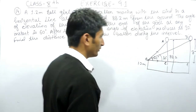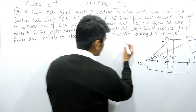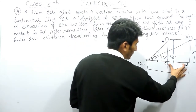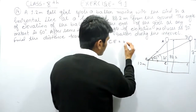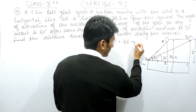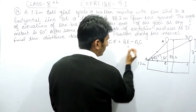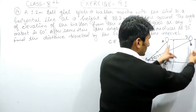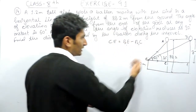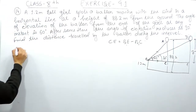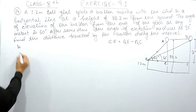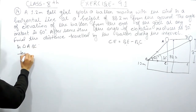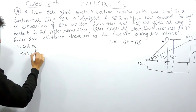We need to find CE. To find CE, we subtract BC from BE — the remaining CE will be the distance traveled by the balloon. Now let's find these distances. In triangle ABC, tan theta equals perpendicular upon base.